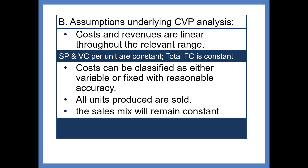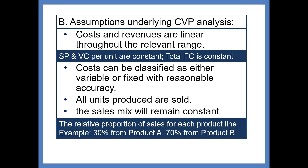The sales mix will remain constant. What we mean by sales mix is the relative proportion of sales that come from each product line — you must have more than one product line for sales mix to have any effect. An example of sales mix might be that 30% of sales come from product A and 70% come from product B.